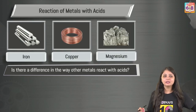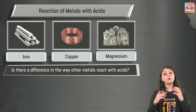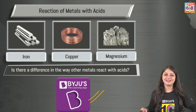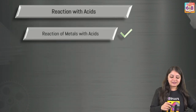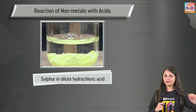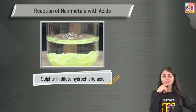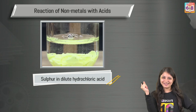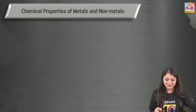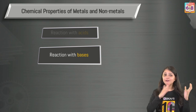Now we talked about aluminium, but what about other metals like iron, copper, magnesium — are all of them reacting the same way? Let's see how non-metals react with acids. Take sulphur — yellow sulphur powder added to dilute hydrochloric acid. In this case, not much is happening. So yes, non-metals generally do not react with acids. This is a very important point to note.